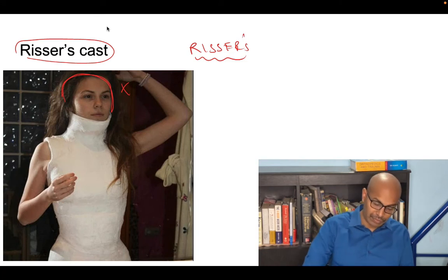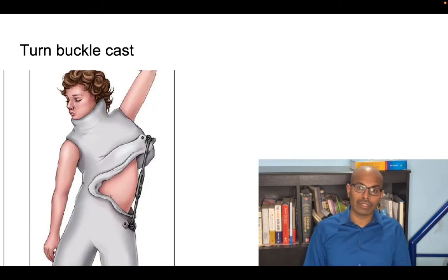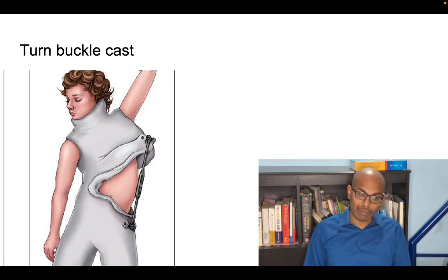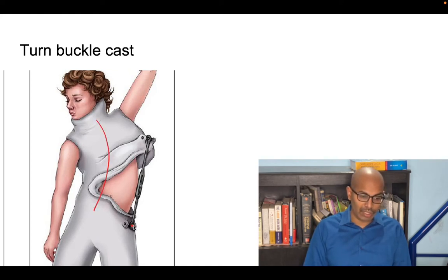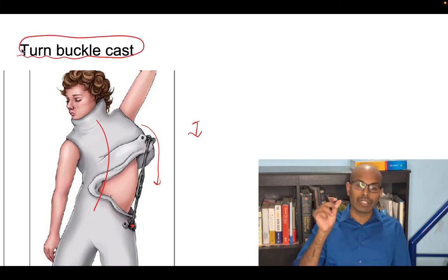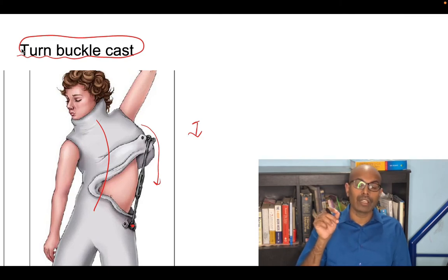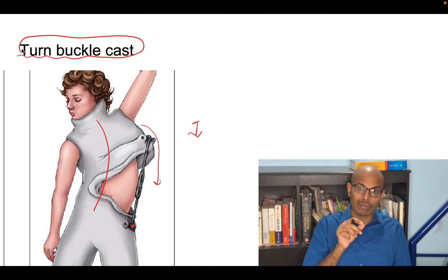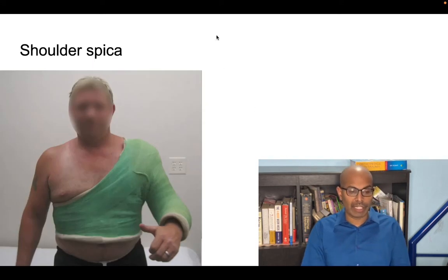The turnbuckle cast is used for scoliosis correction. By slowly rotating a screw or nut, the spine is progressively straightened. The turnbuckle mechanism is also used at the elbow and knee, but specifically in the spine context it is for scoliosis. Nowadays a turnbuckle splint is more commonly used.